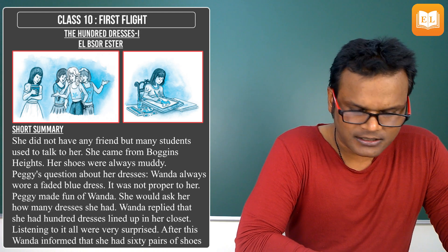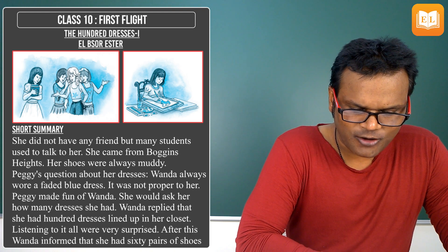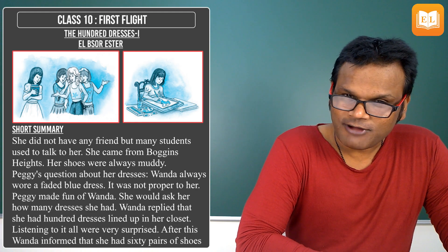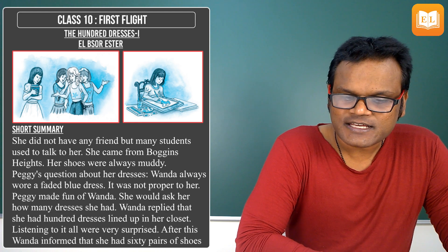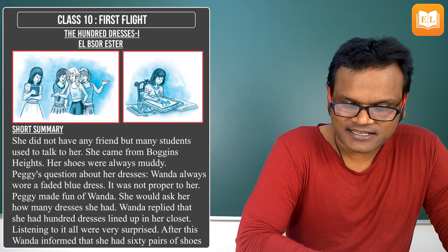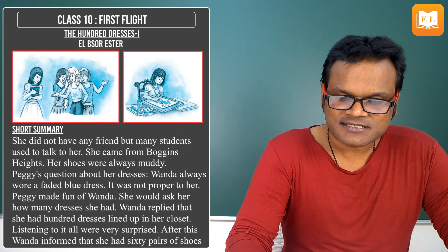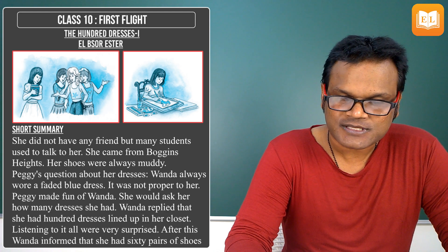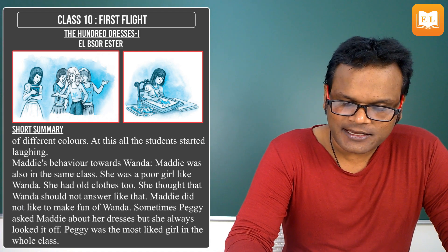Peggy made fun of Wanda. She would ask her how many dresses she had. Wanda replied that she had 100 dresses lined up in her closet. Listening to this, all were very surprised. After this, Wanda informed that she also had 60 pairs of shoes of different colors.